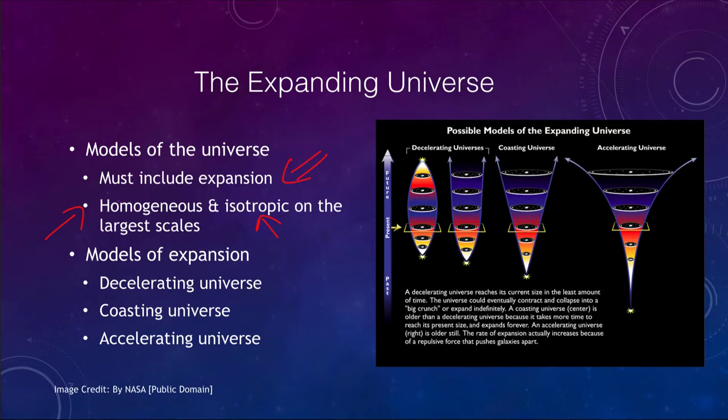There are various models that can occur depending on the amount of material in the universe. We can have a decelerating universe, a coasting universe, or an accelerating universe.